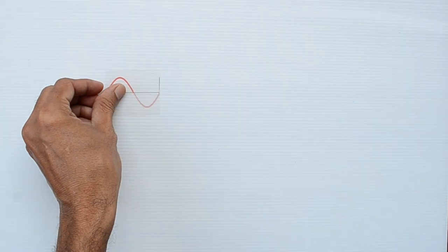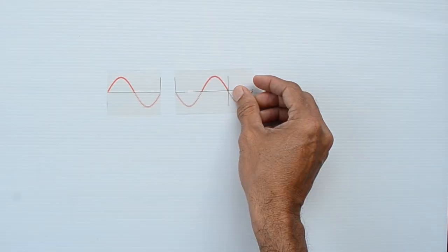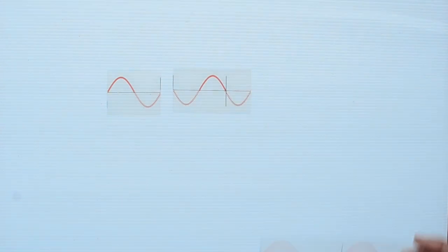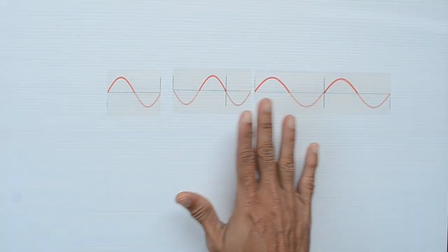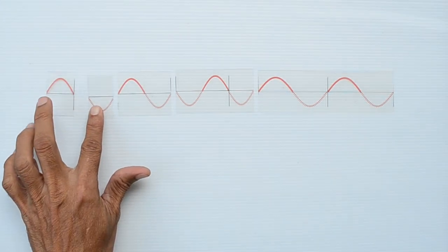This is one wavelength. 1.5 wavelength. Two wavelengths. Half wavelength. And so on.